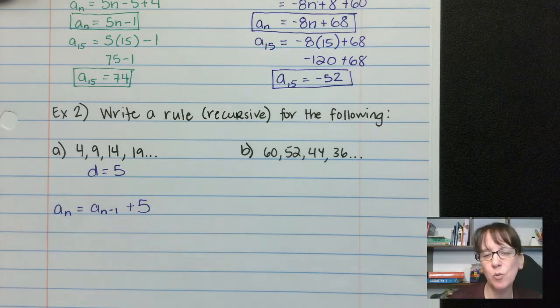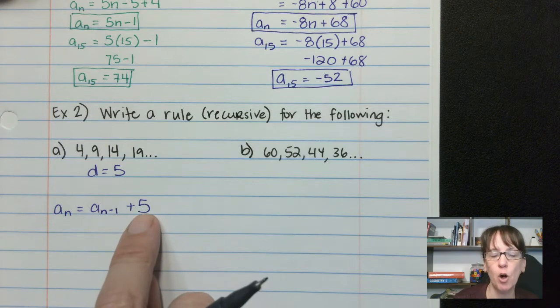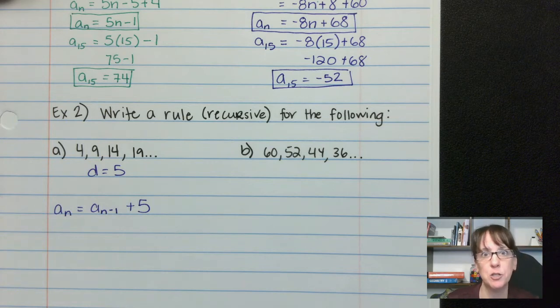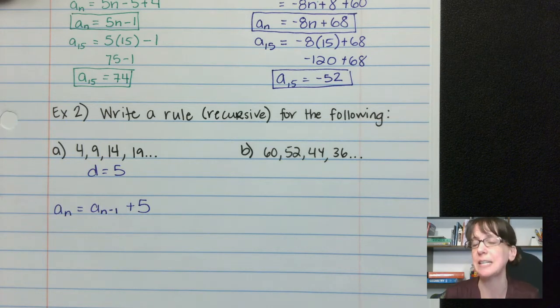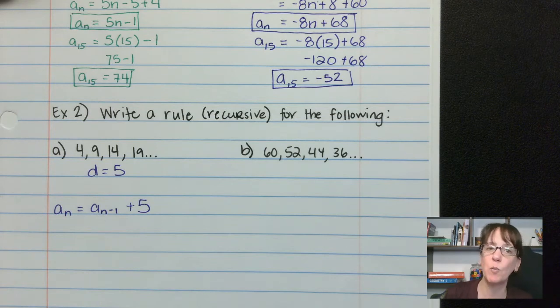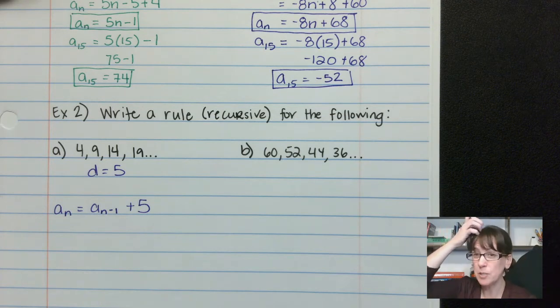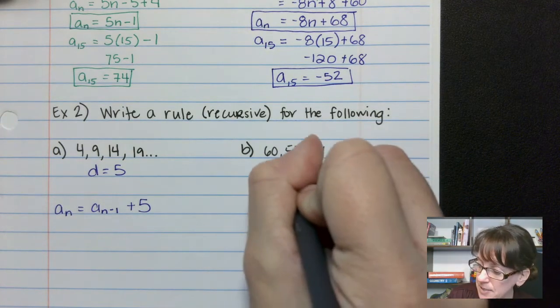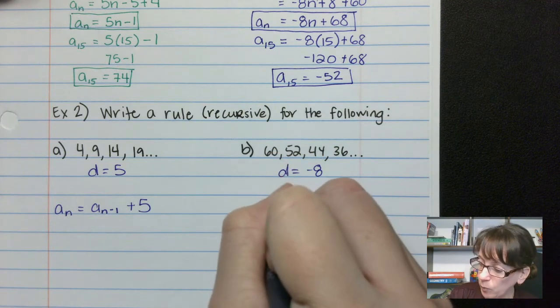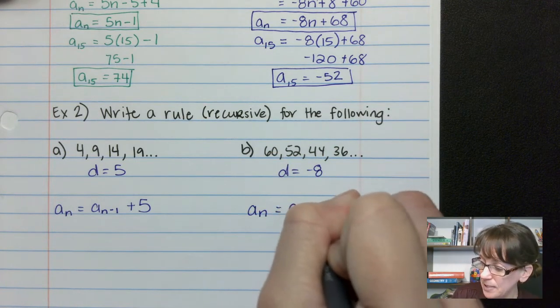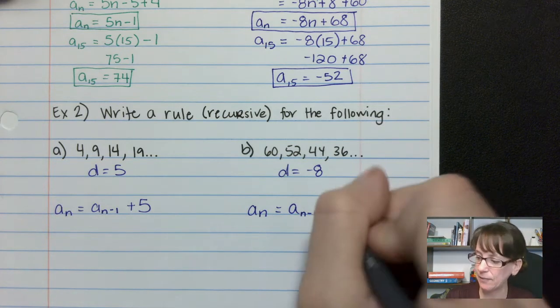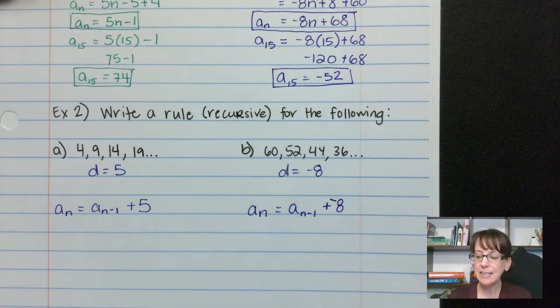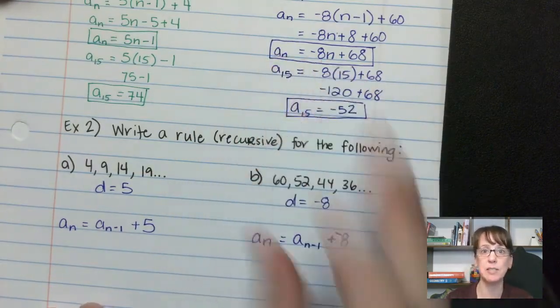Now this is, I mean, that's a great rule and all, but that's not really helpful because if I wanted to go all the way up through 15, I would have to know what position 14 was. And in order to know position 14, I would have to know position 13, so on and so forth. So it's not always the best way to write these rules. These explicit rules are much more helpful. So same idea with this one. I would just say my common difference is negative 8. So my recursive rule would be a_n equals a_(n-1) minus 8 or plus negative 8, either way that you want to think about it. So that is the recursive rule. That's why the explicit rule is much easier.